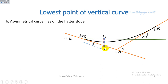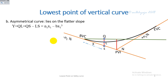Let the lowest point lie at a distance X from the beginning of the vertical curve. In this case we consider the vertical valley curve as a cubic parabola, using the relation: y = N1·x − B·x³. If we consider the valley curve as a square parabola, we can determine the lowest point similarly to how we calculated the highest point on a summit curve.